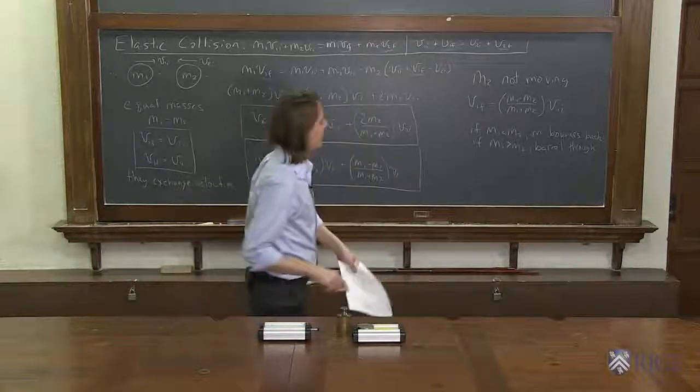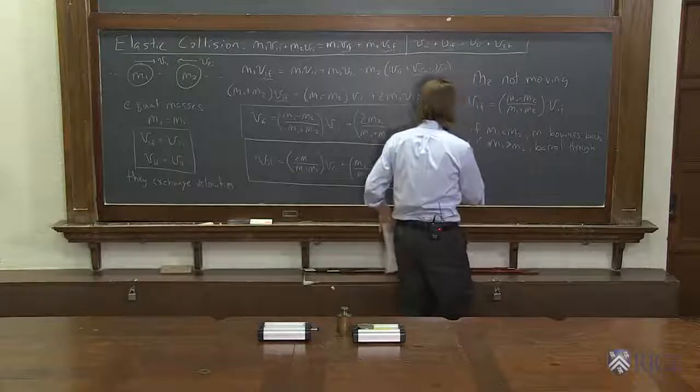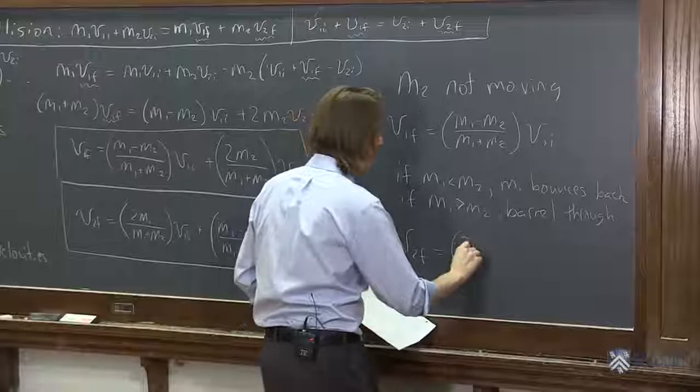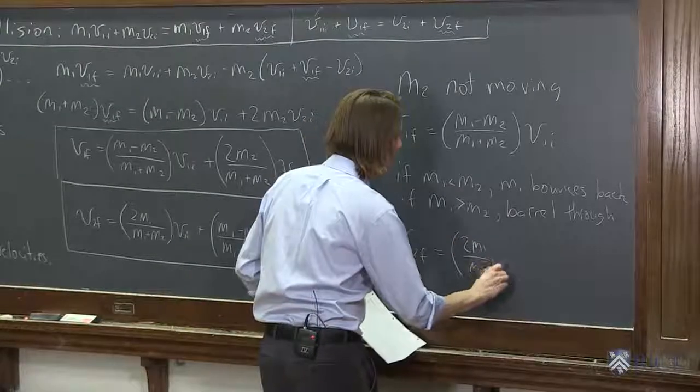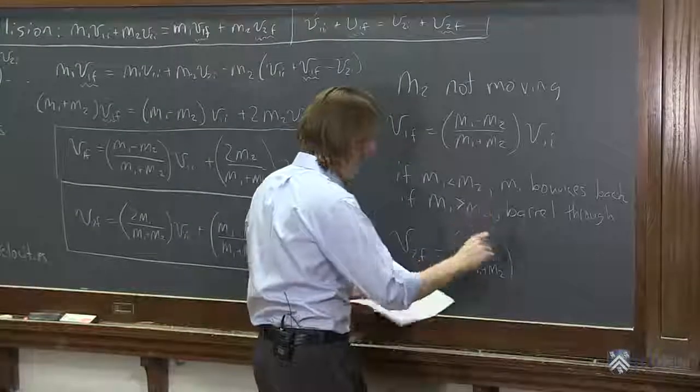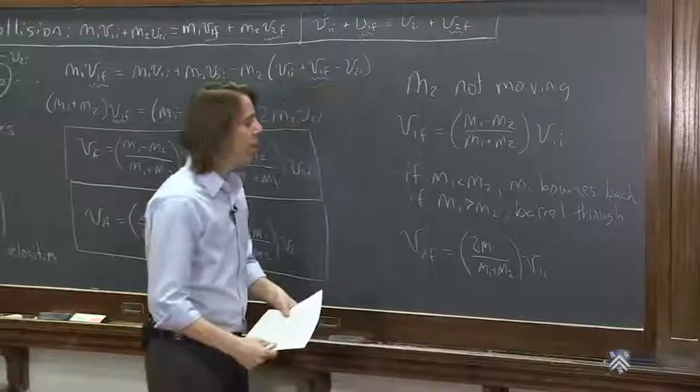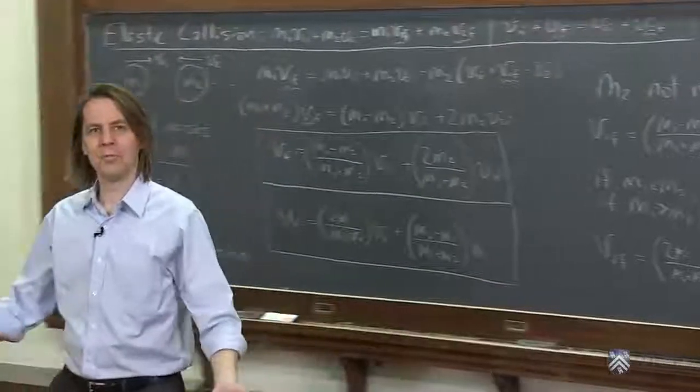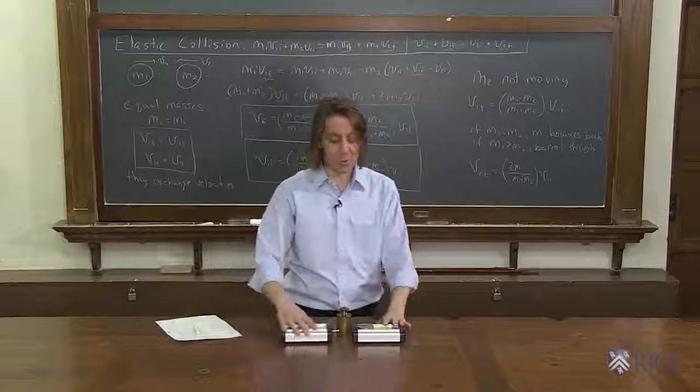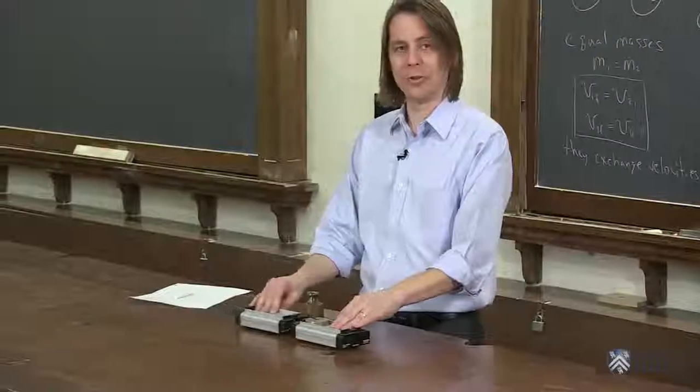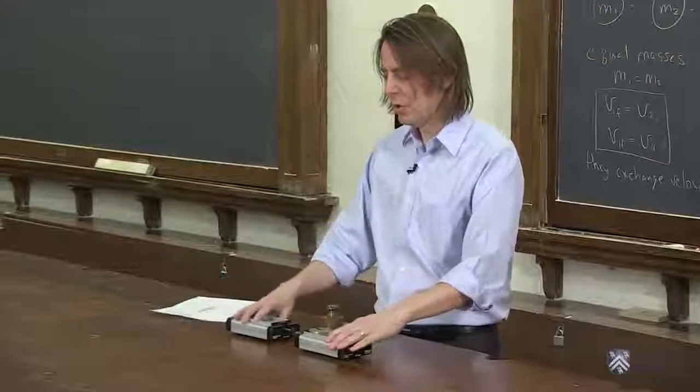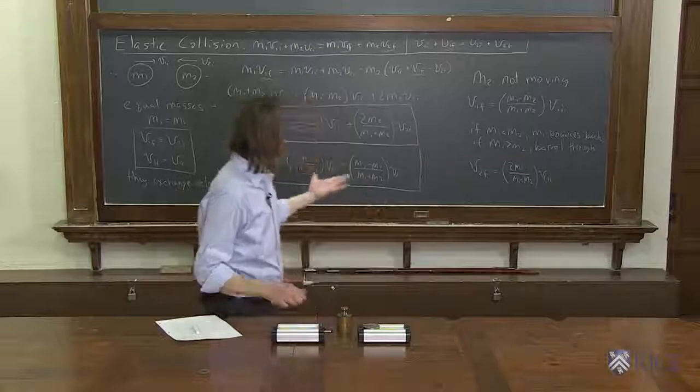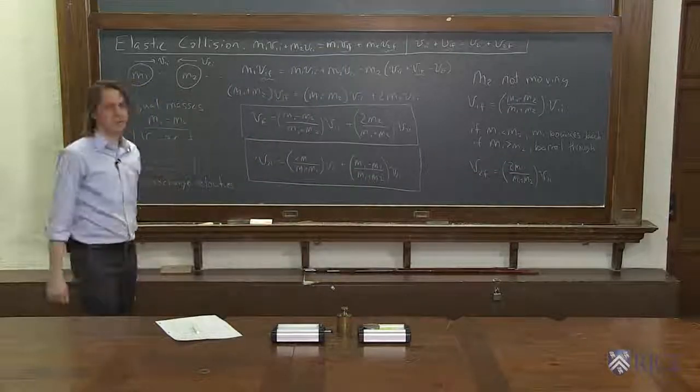And then I guess the final insight we can get from this is to say v2f is the 2m1 over m1 plus m2 and v1i. And all you get from this is, no matter what the case of one greater than the other, this is always positive. m2 will always go forward. You can't really imagine. The only way it could go backwards is if this one also went backwards. And then that would clearly not conserve momentum if everything started moving that way. So we know that all these equations make sense in these limiting cases. And that's what the general solution is good for, to learn some sort of intuition for how things interact.